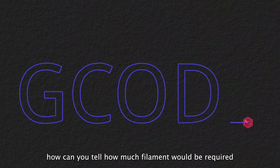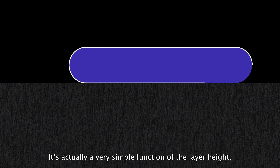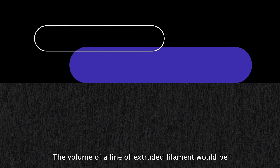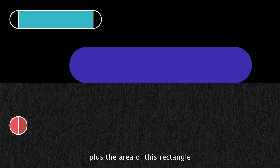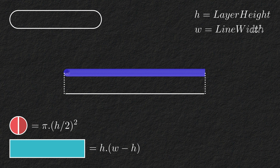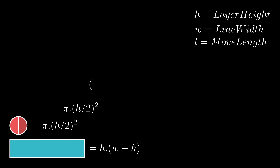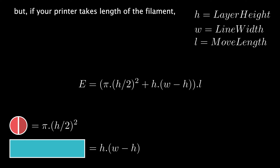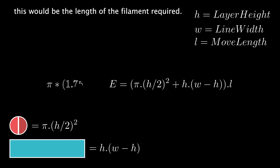How can you tell how much filament would be required for a particular move? It's actually a very simple function of the layer height, line width, and the length of the move. Different slicers would of course use different approximations, some simpler and some more complex. The volume of a line of extruded filament would be the area of two semicircles plus the area of a rectangle multiplied by the length of the line. If your printer takes volume as the E parameter, you can just feed this in. But if your printer takes length of the filament, like mine does, you can calculate it simply. I use filament with 1.7mm diameter — this would be the length of the filament required.